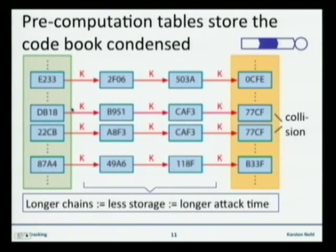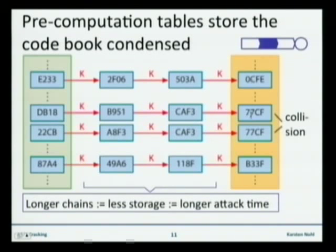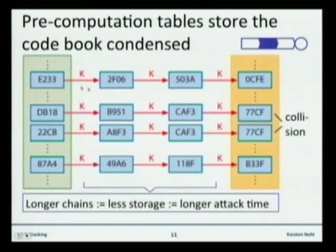So if the output you're observing over the air is anywhere in this table — the computed part, not the stored part — you will find its corresponding secret key by doing just a couple of computations and a couple of hard disk lookups. You can store this as small as you want by having the chains be longer. The longer the chain becomes, the smaller the table has to be, because the entirety of it has to cover something like 2 to the 57 values.